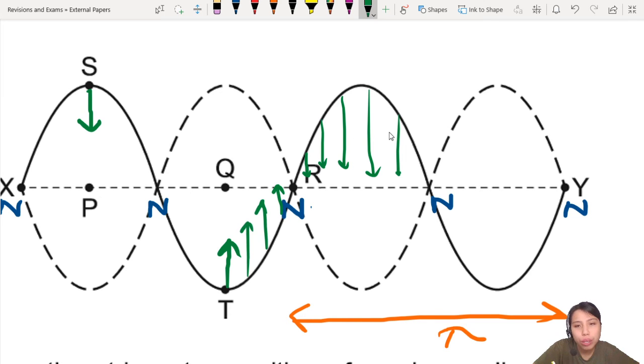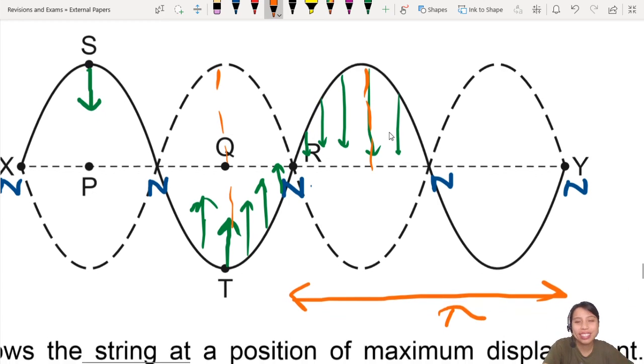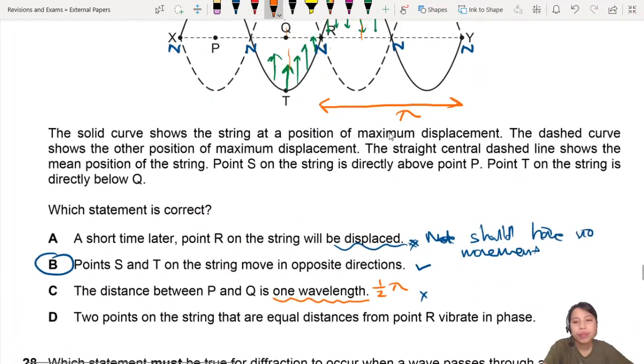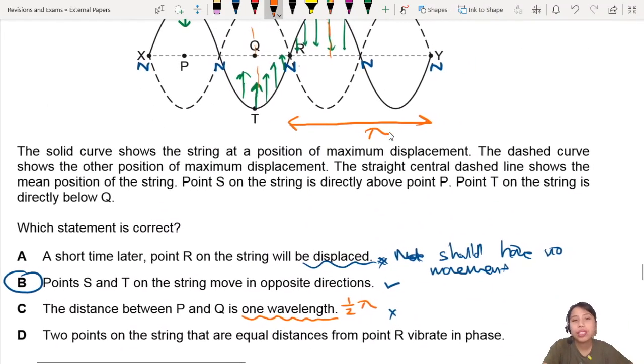So what are you talking about? No, no, no, no, no. Any equal distance, let's say you say from here and here, one is moving down, one is moving up. So that's not correct. So that answer is wrong. Not D. Not in phase. They are out of phase, 180 degrees.